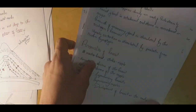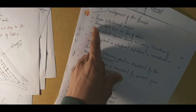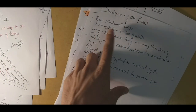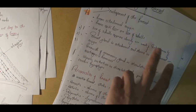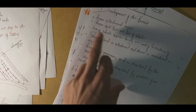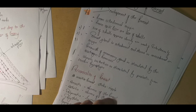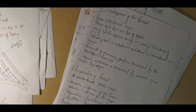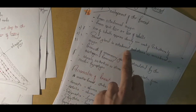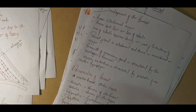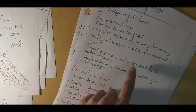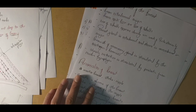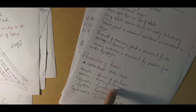The breast develops from the ectodermal region, from the milk line or line of Schultze - named after the scientist. This line appears during the fourth week of intrauterine life. The breast gland is ectodermal in origin and the stroma is mesodermal. Growth of the mammary gland is stimulated by the oestrogen hormone. Alveolar development is stimulated by prolactin from the cerebral hypophysis.